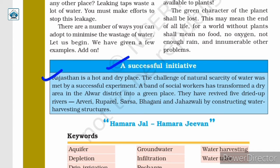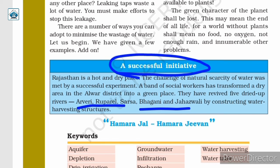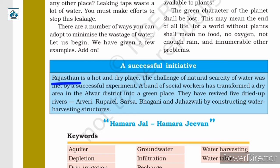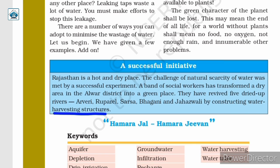A successful initiative: Rajasthan is a hot and dry place with a natural scarcity of water. This challenge was met by a successful experiment — a band of social workers has transformed a dry area in the Alwar district into a green place. They revived five dried-up rivers — Arveri, Ruparell, Sarsa, Bhani, and Jahazwali — by constructing water harvesting structures. This shows how water harvesting can effectively solve even severe water shortage problems.